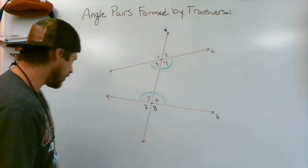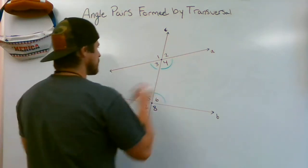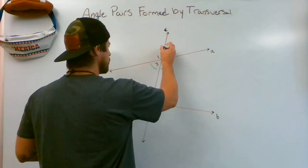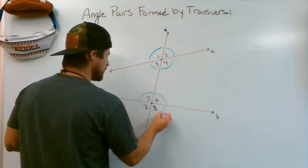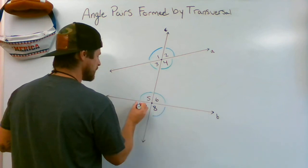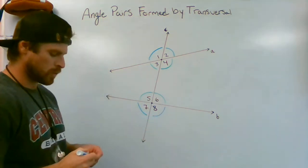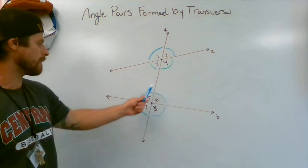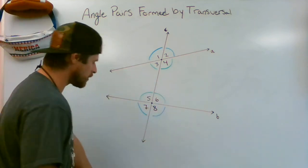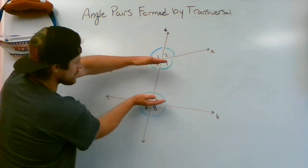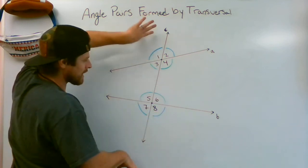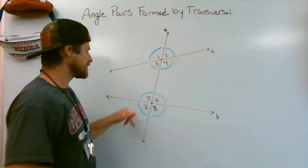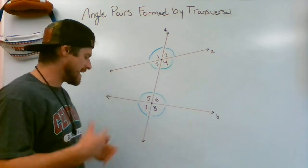Our exterior angles can be marked in blue — those are angles one, two, seven, and eight. So if you were asked what are your interior angles, you'd say three, four, five, and six. But if we go outward, outside of those two lines, those are going to be one, two, seven, and eight — exterior.